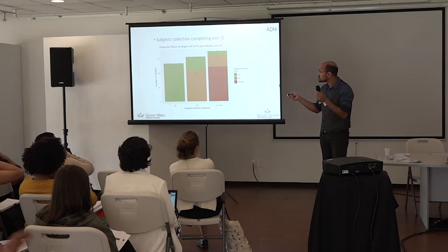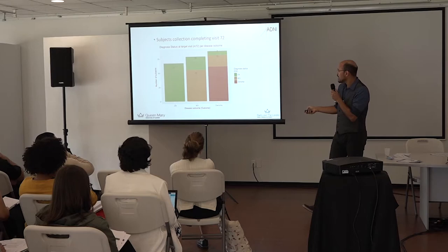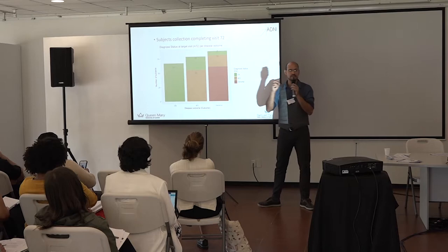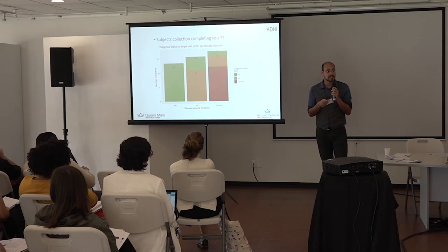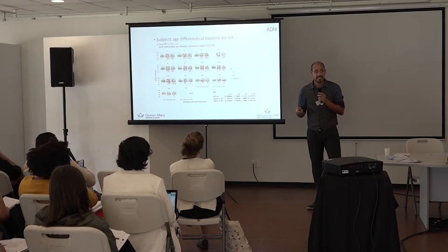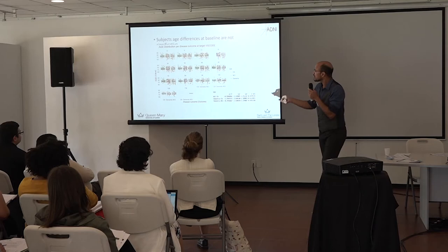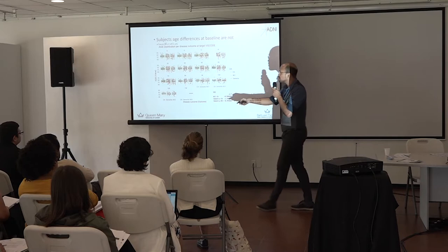At month 72, there are 27 cases that have not yet been diagnosed as dementia. We want to tell that these people will develop dementia before they actually do — machine learning can help. This shows the difference in the number of patients per age in every visit from visit 0 baseline to visit 120, considering only patients who completed visit 72.